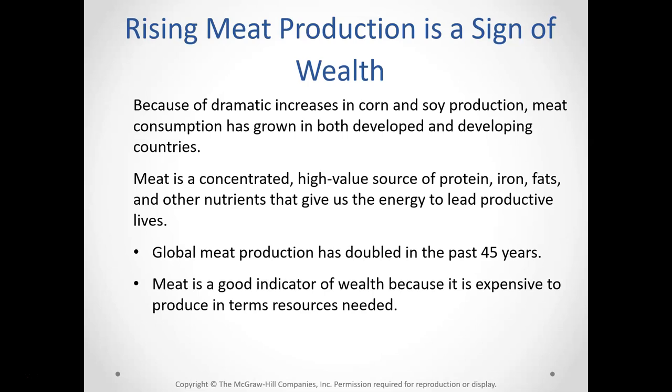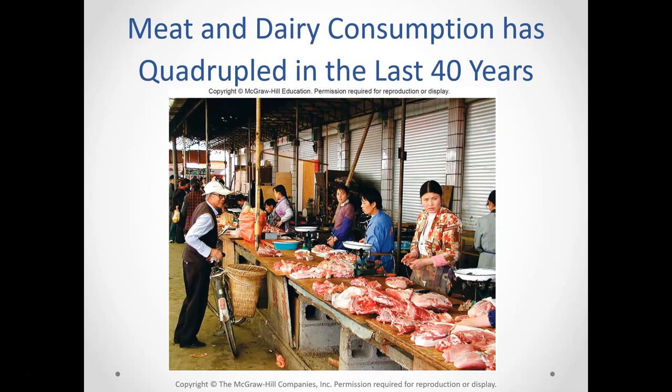As people have more money, they spend it on food — if you can afford beef or pork now where you couldn't before. We've seen global meat production double in the last 45 years. It's a sign of wealth because it's very expensive in terms of production to produce meat. Meat and dairy consumption has quadrupled in the last 40 years.